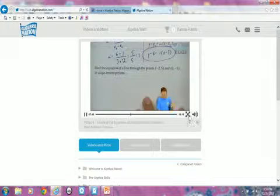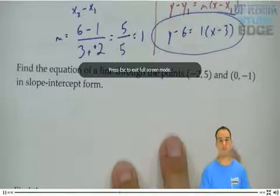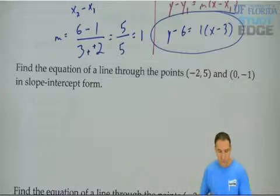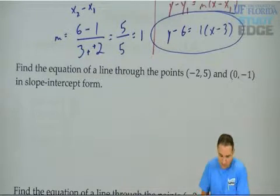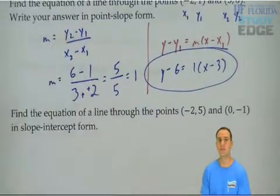Let's find the equation of a line through these two points in slope intercept form. We have two points. What do we have to find first? Slope. So let's once again find slope. We have the slope equation right here.